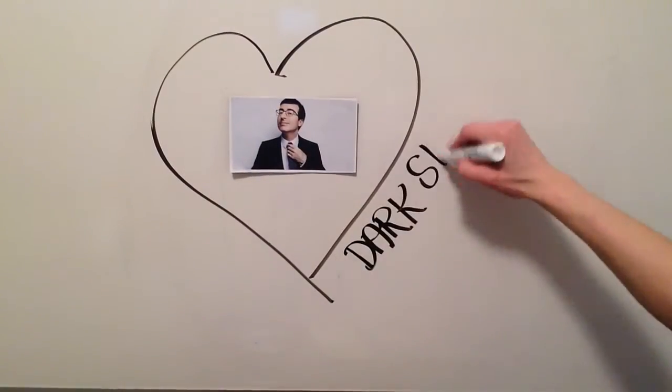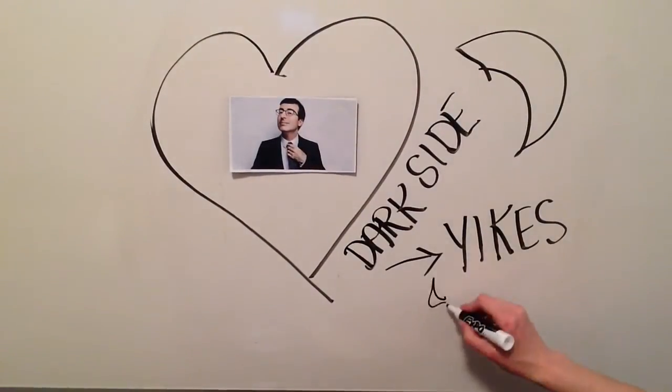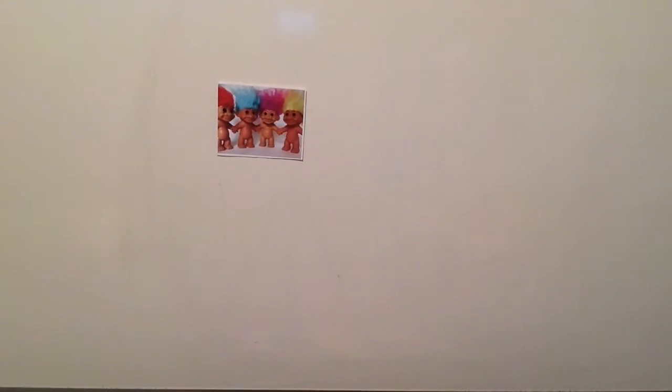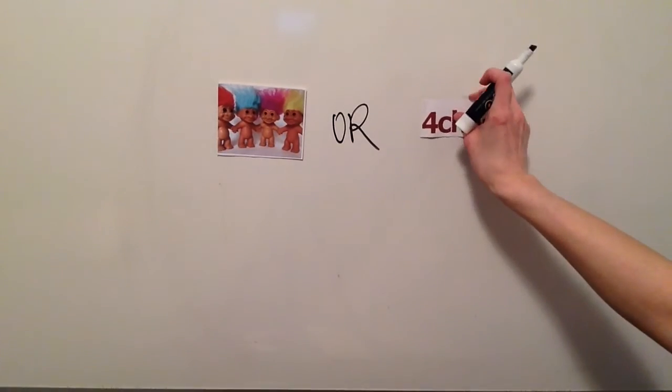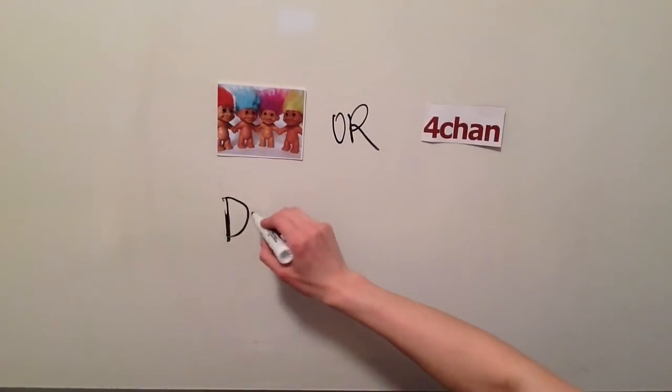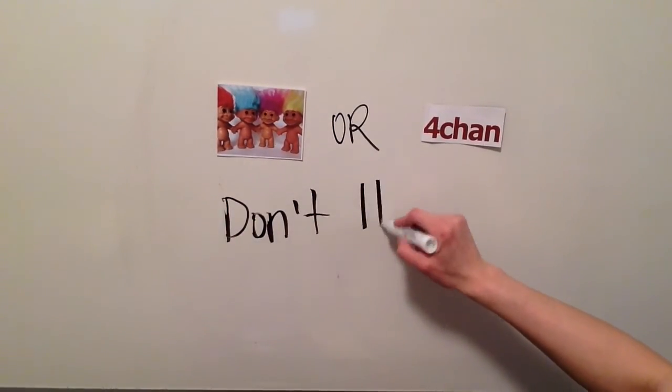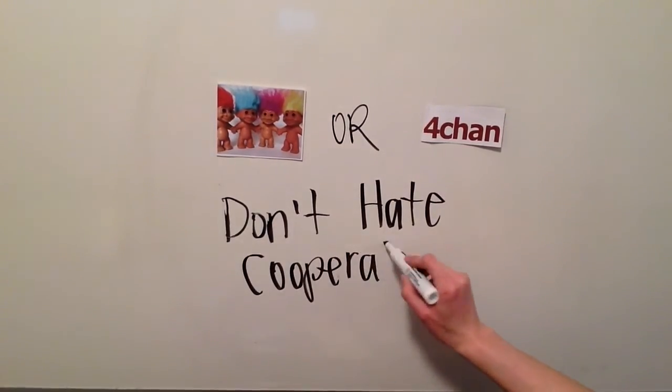John Oliver, my new crush, informed us about the dark side of the internet. The dark side includes trolls and 4chan. Don't be fooled by those smiles and that Kylie Jenner hair. They are both your real and virtual worst nightmare.